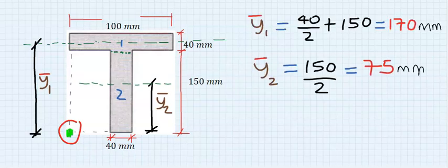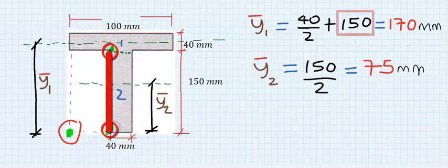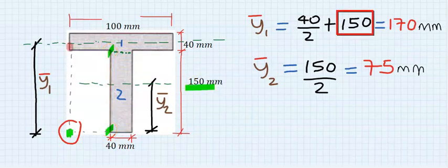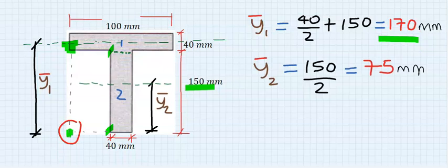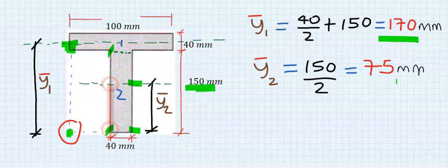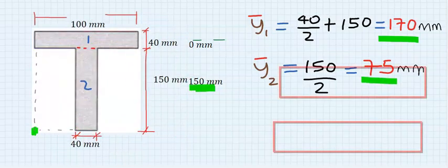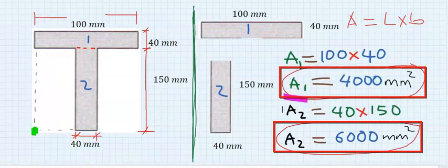For the first rectangle, the centroid total considering the reference point: from this point to this point is 150, and from this point to this point is 20, because 40 split into two gives 20, making the total 170. For the centroid of the second rectangle, we split 150 into two, which gives 75.